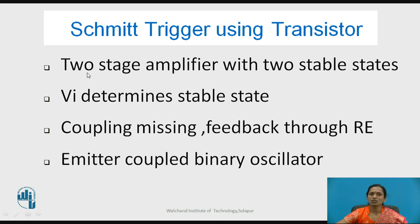The emitter terminals of both transistors are short-circuited to each other, so the circuit is called emitter-coupled. It oscillates between logic 1 and logic 0, and is also called a world binary oscillator.